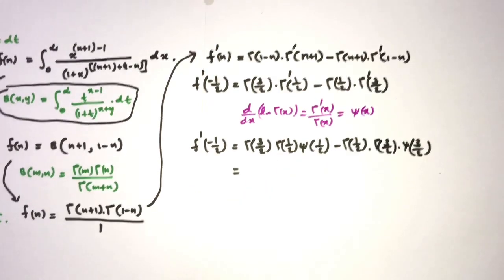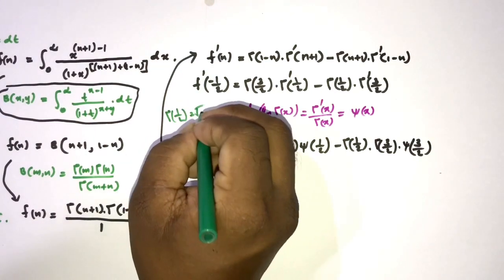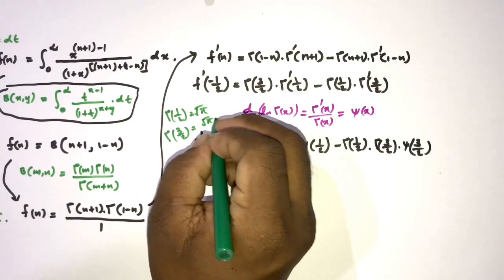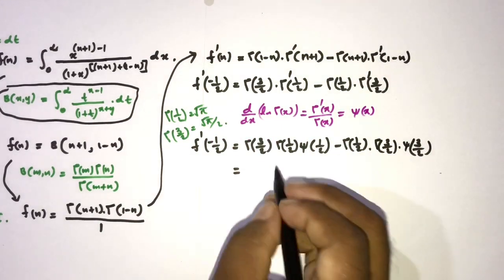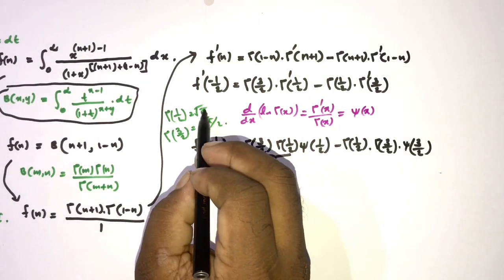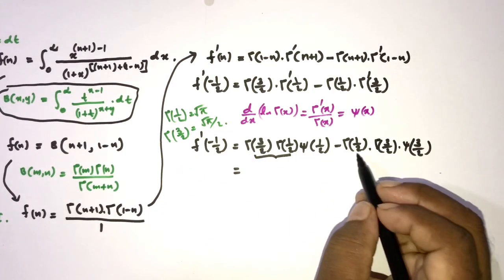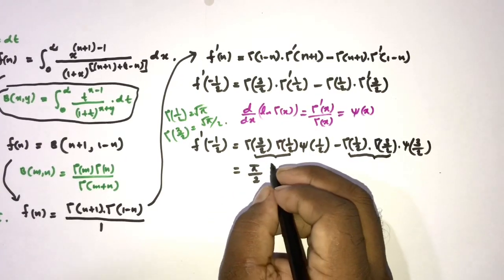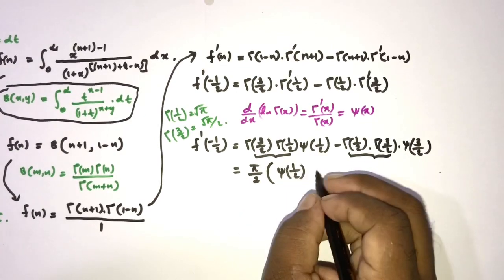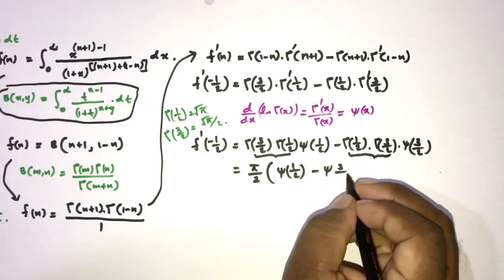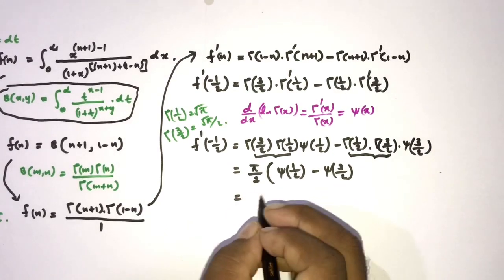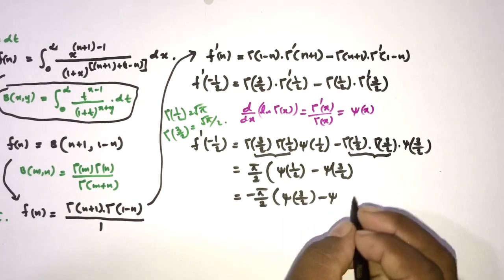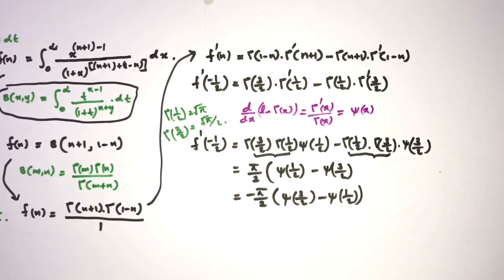We know Gamma(1/2) equals sqrt(π) and Gamma(3/2) equals sqrt(π)/2. Their product is π/2. We can factor out π/2 and write f'(−1/2) equals (π/2) times [psi(1/2) minus psi(3/2)], then taking a minus sign as common factor: equals −(π/2) times [psi(3/2) − psi(1/2)].